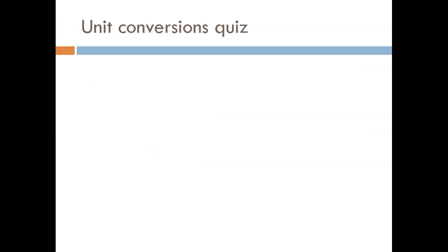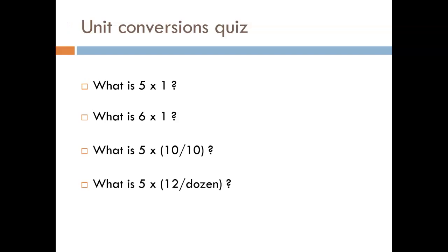Alright, pop quiz time! Let's see if you can answer these tough questions. What is 5 times 1? It's simply 5. What is 6 times 1? It's 6. Now, a little bit tougher. What is 5 times 10 divided by 10? The 10 over 10 is just the same as 1, so 5 times 1 gives us 5. We can get fancier and throw in a word that represents a value. What is 5 times 12 over 10? Again, we are just multiplying by 1, and the result is the original value 5. Finally, I can multiply by fractions that equal 1 as many times as I want. The result would still be the original value 5.